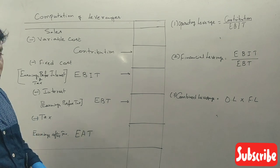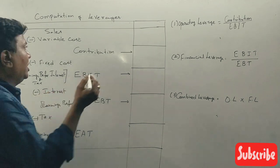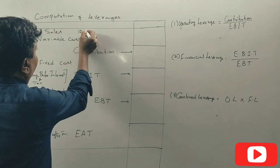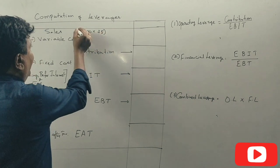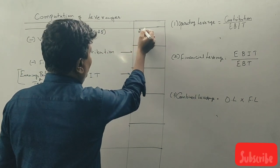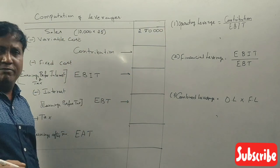Sales: ten thousand units. One unit sale twenty-five rupees, total sales two lakh fifty thousand rupees.